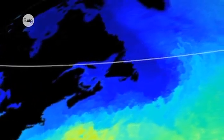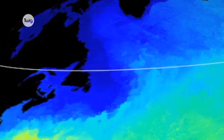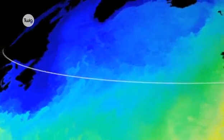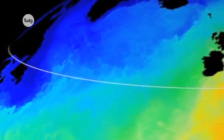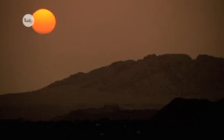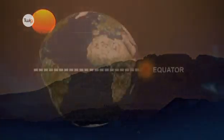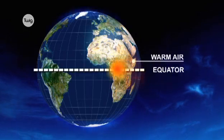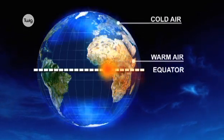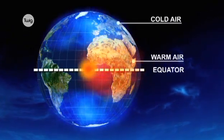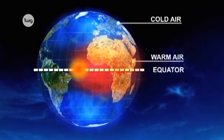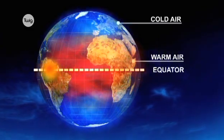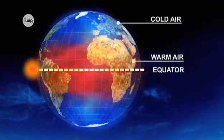Latitude, location north or south of the equator, plays a major role in influencing climate. The curvature of the Earth means that the sun heats the equator more strongly than the poles. As a result, the nearer you get to the equator, the warmer the climate tends to be.